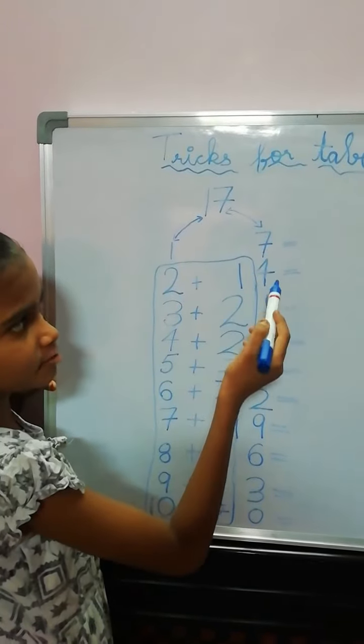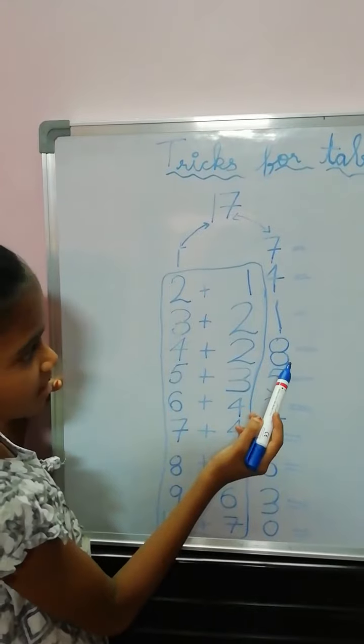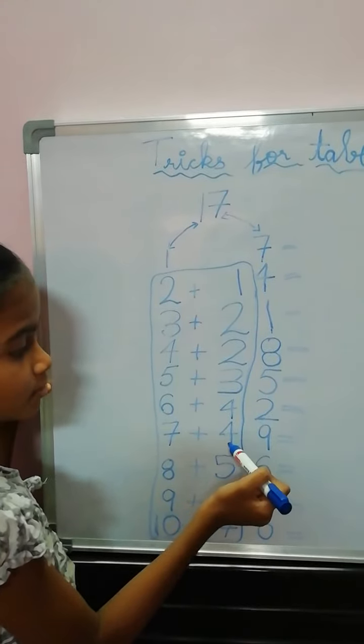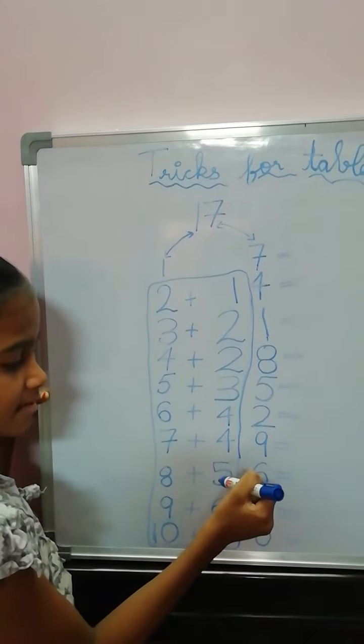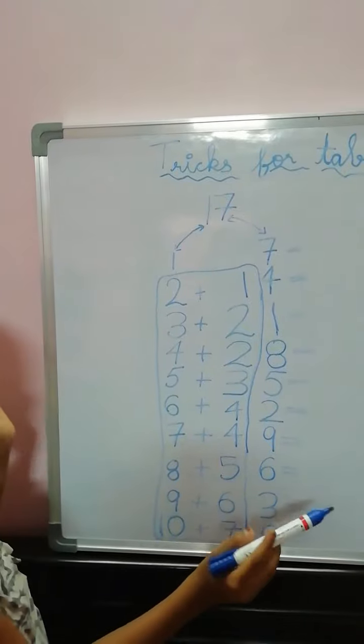7, 1's are 7. 7, 2's are 14. 7, 3's are 21. 7, 4's are 28. 7, 5's are 85. 7, 6's are 42. 7, 7's are 49. 7, 8's are 56. 7, 9's are 63. 7, 10's are 70.